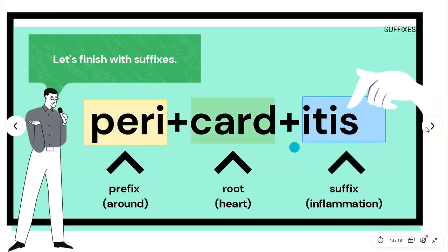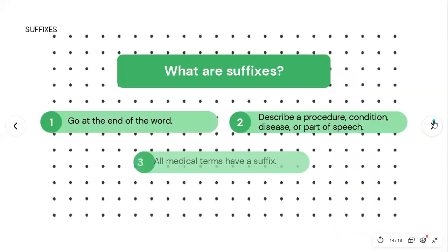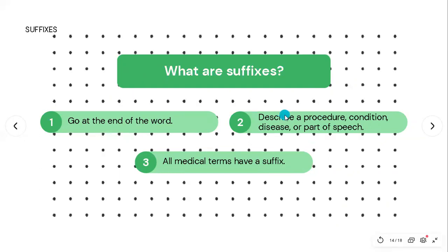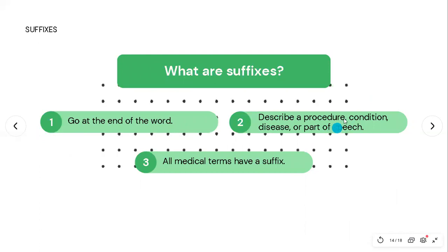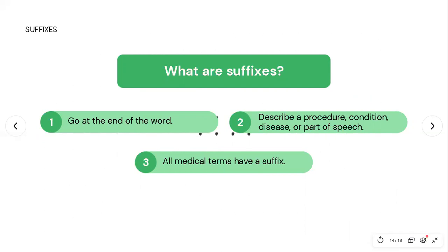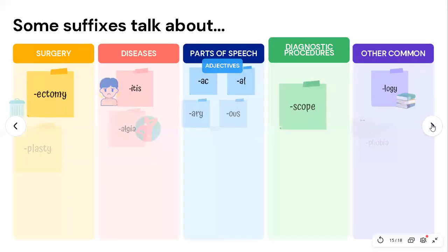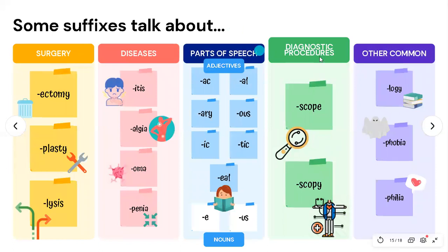Finally, we have the suffix — the end of the word, '-itis' in 'pericarditis.' Three things to know: suffixes go at the end of the word; they usually describe a procedure, condition, disease, or part of speech; and all medical terms have a suffix. Suffixes related to surgery include '-ectomy' meaning removal, '-plasty' meaning repair, and '-lysis' meaning separation.